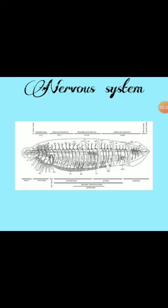The hollow nerve tube is located dorsal to the notochord. The channels are situated inside the neural tube. Inside the neural tube, there is a neurocoel, or central canal.